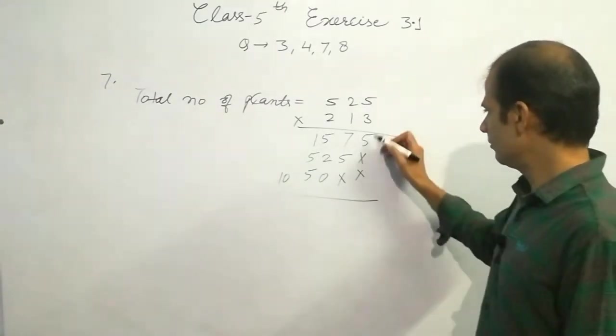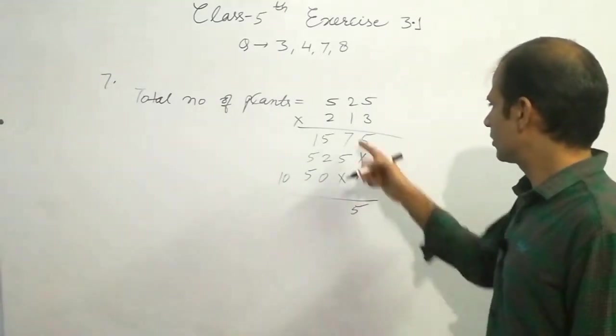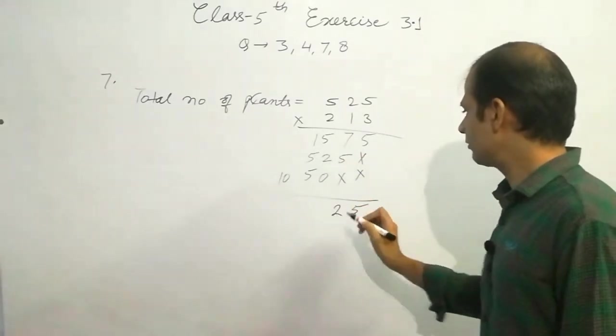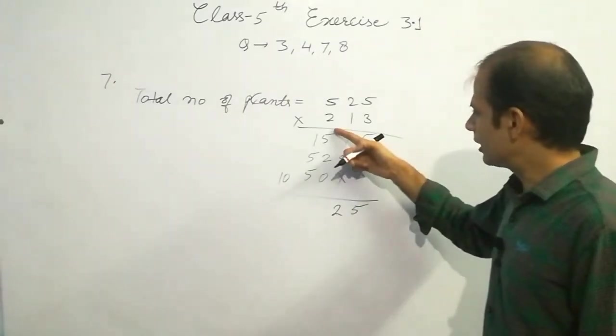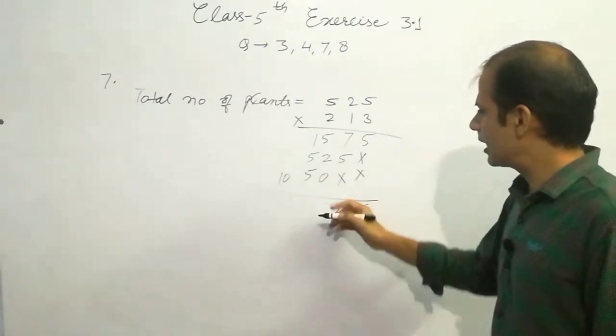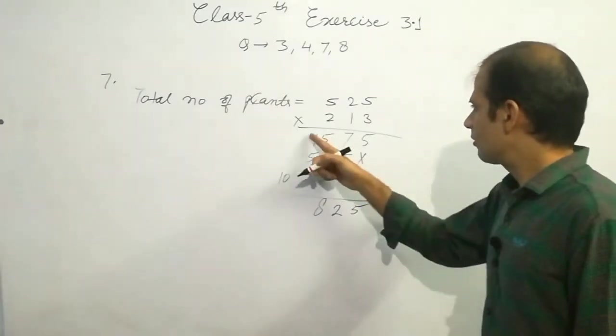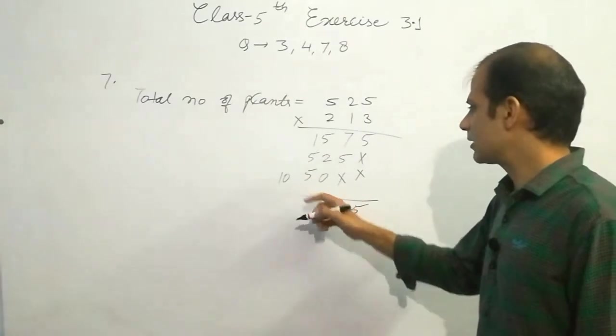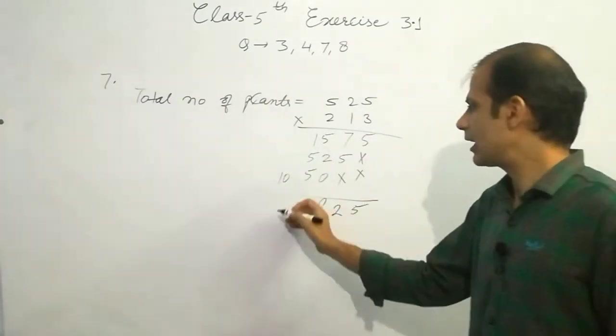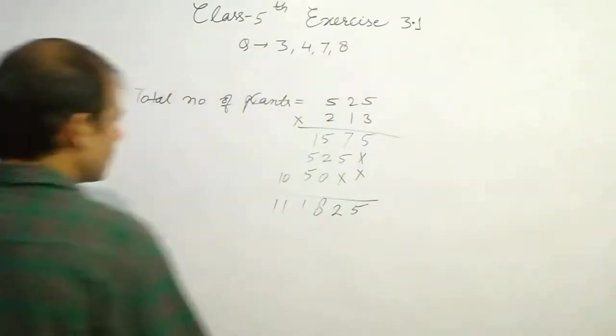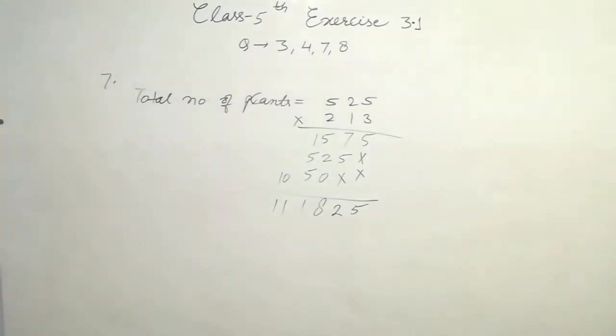Perform the addition. This is 5. This is 7 plus 5, 12, 1 carry. 1 plus 5, 6 plus 2, 8. And it is 0, so we write 8. 1 plus 5, 6 plus 5, 11, 1 carry and it is 11. So what is this number? 1 lakh, 11,825. So answer of question number 7 is 111,825. All the students note it down.